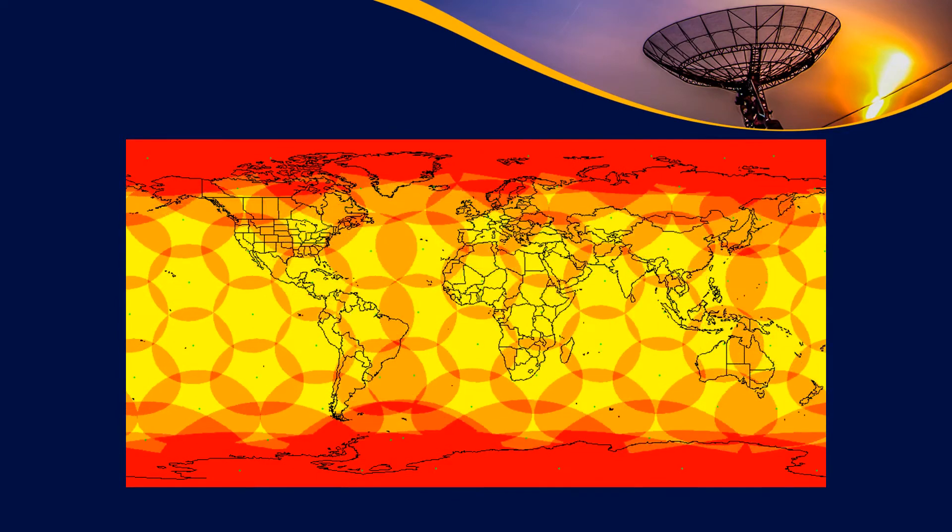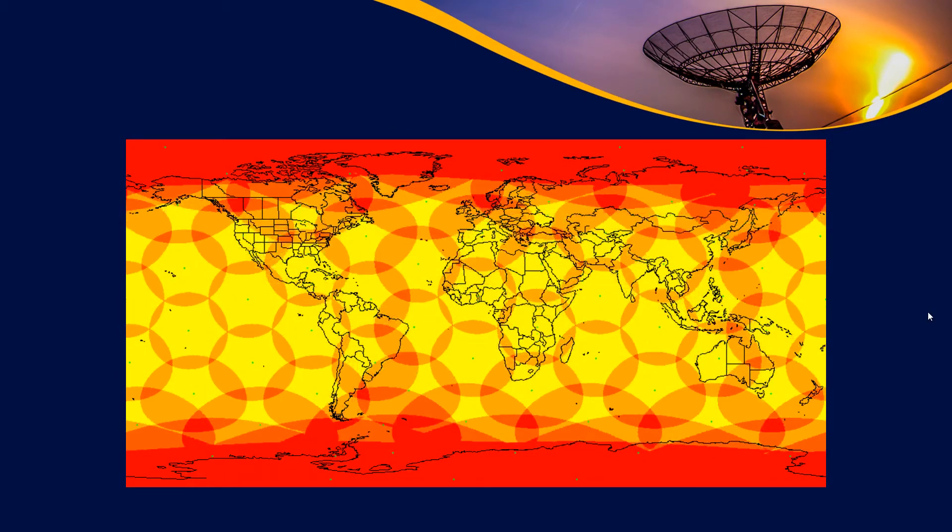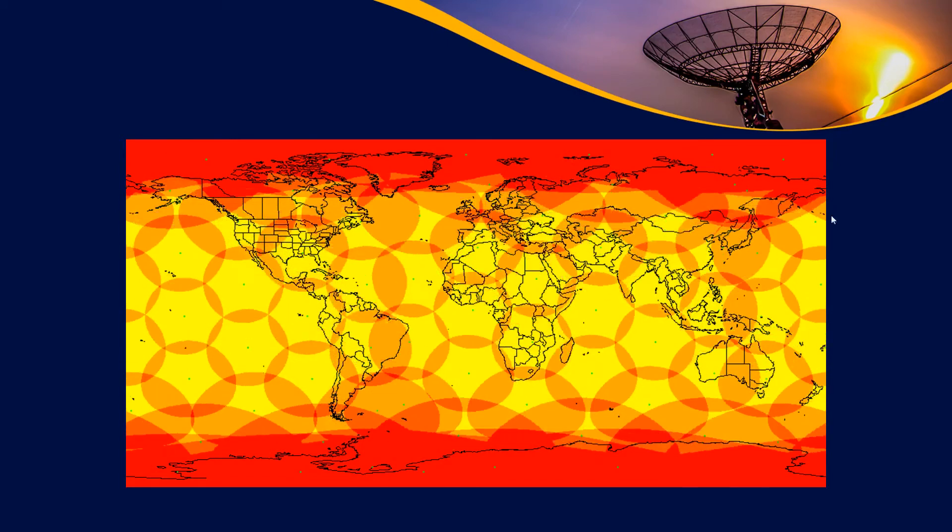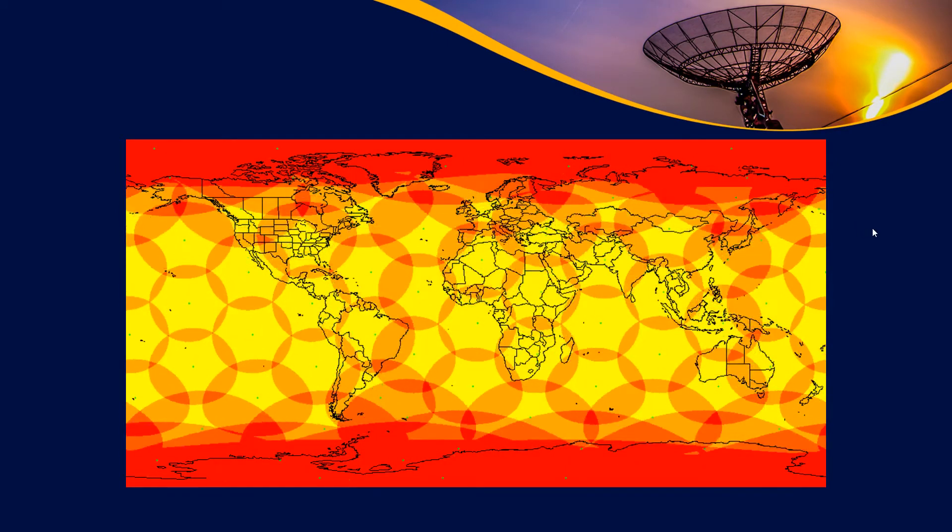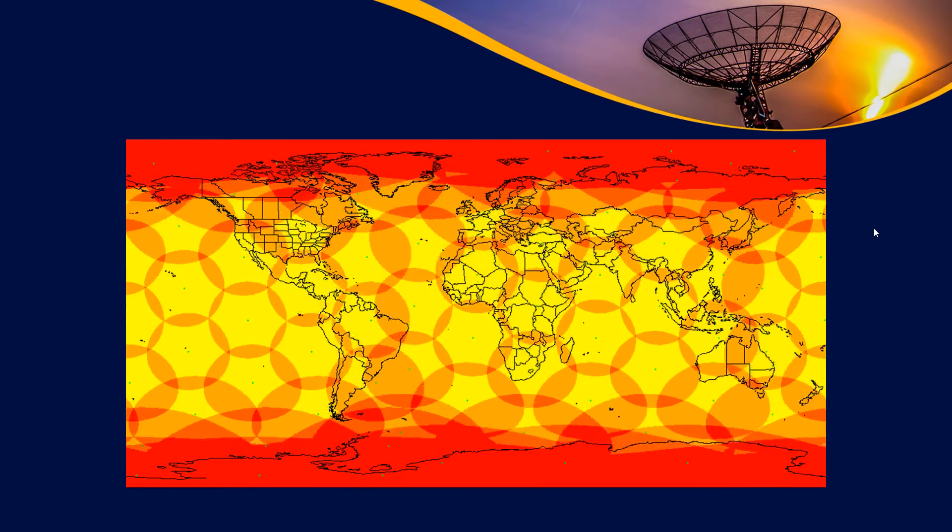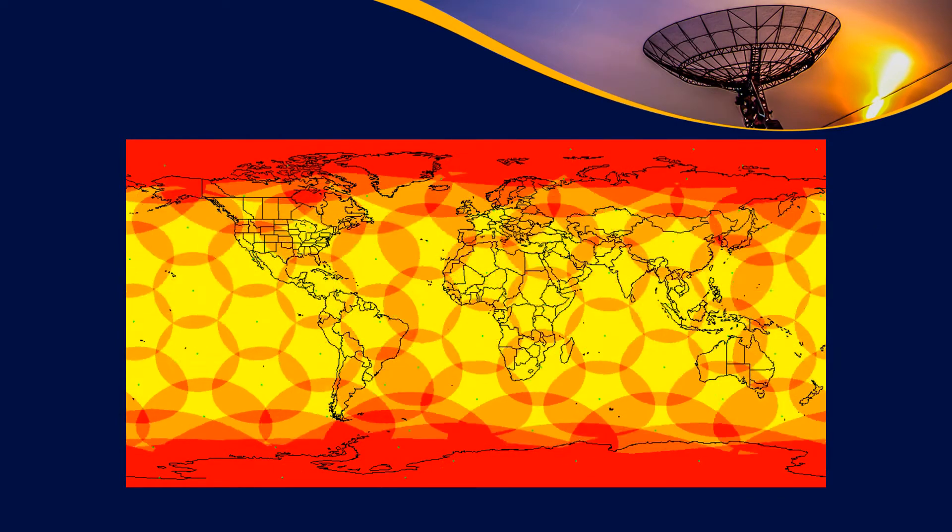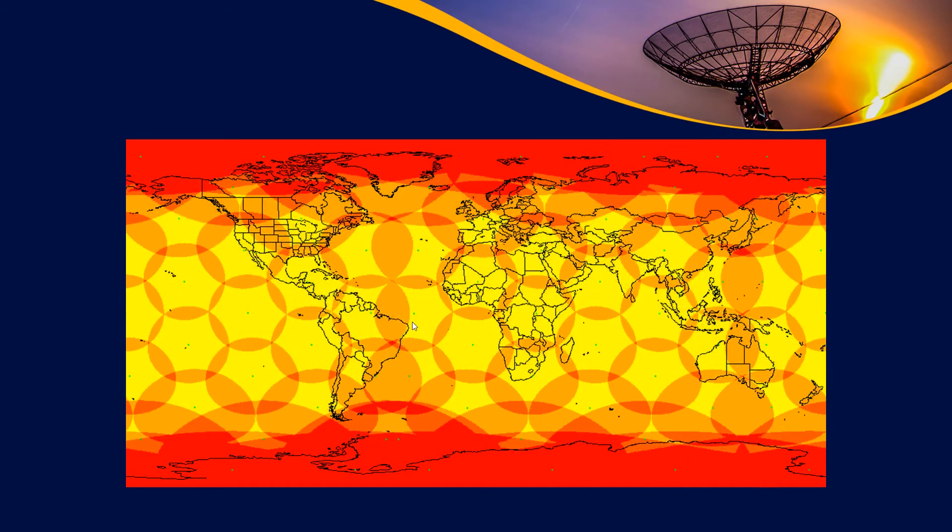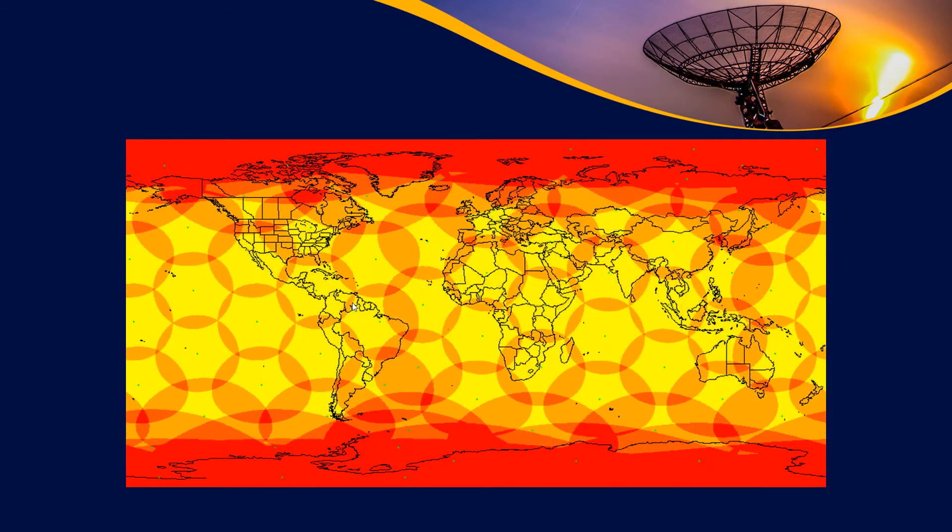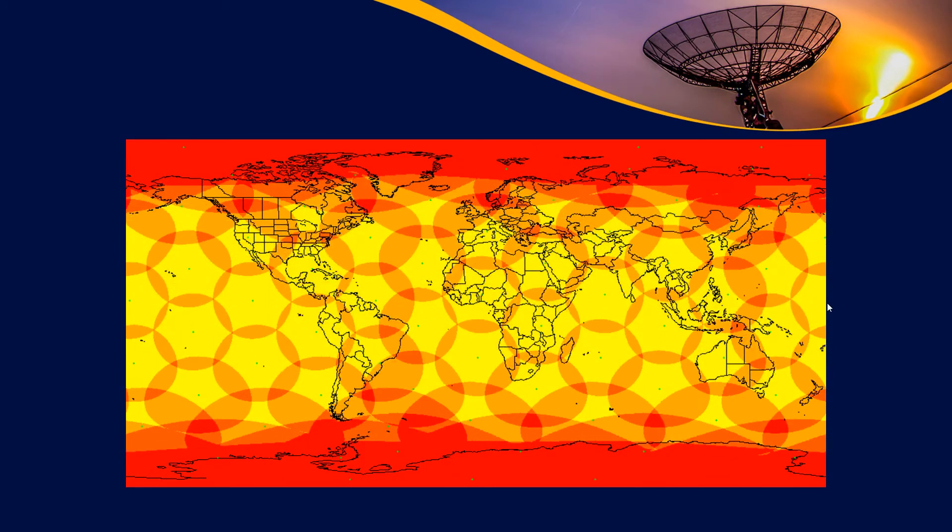Because the Iridium constellation operates with a very high inclination, you see that the poles have extremely good coverage at all times, but the rest of the earth doesn't always have quite as great of coverage. It just depends on how lucky you are. The closer you are to the equator, the harder it is going to be to have this kind of complete coverage.